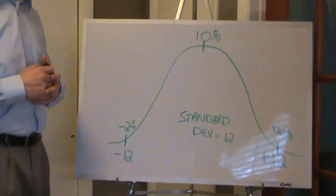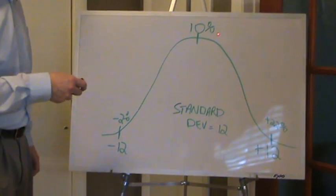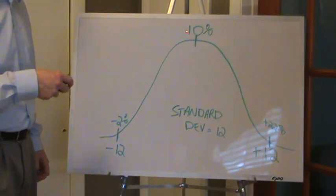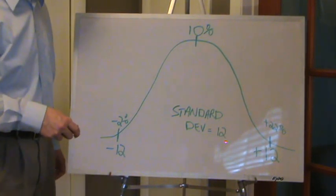Let's say that your portfolio over the last 30-40 years has an expected return of 10%. This would be your mean, your average return of that portfolio. The standard deviation of the portfolio is 12.